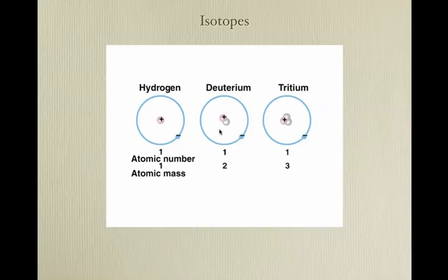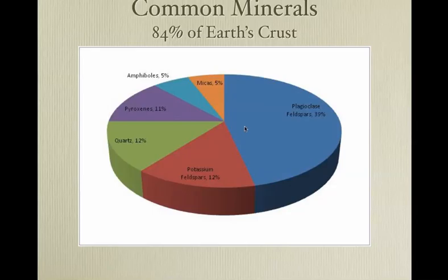Isotopes: an atom can gain or lose neutrons. It doesn't change what the atom is — in this case, this is still hydrogen because it has one proton. We won't be dealing with this a lot in 101.